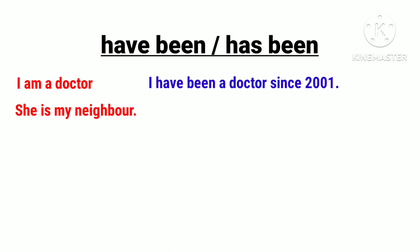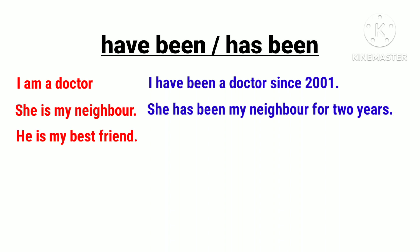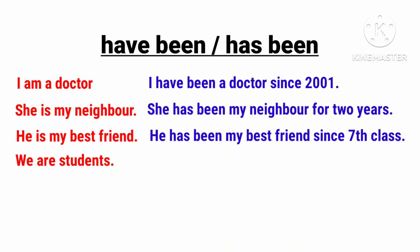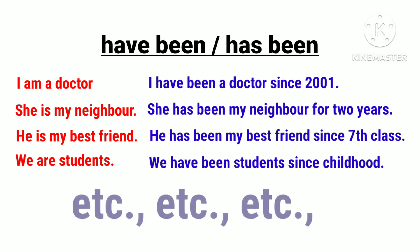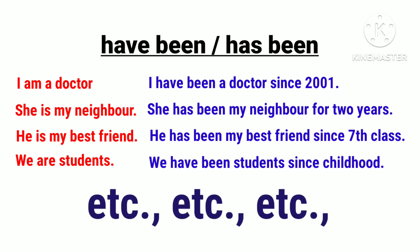'I am a doctor' — اگر کہنا ہو کہ وہ کچھ سالوں سے ڈاکٹر ہے تو have been use کریں گے۔ اسی طرح she کے ساتھ has been، he کے ساتھ has been، we کے ساتھ have been — جیسے میں نے ویڈیو کے starting میں بتایا تھا، اسی طرح سے ہمیں use کرنا ہے۔